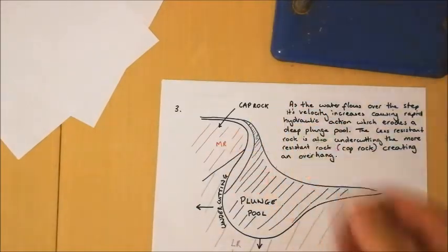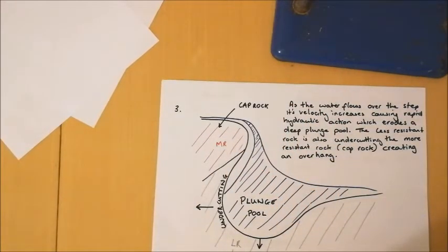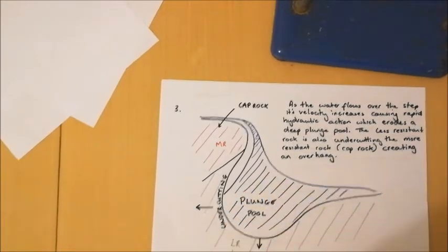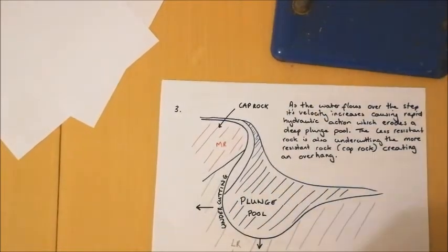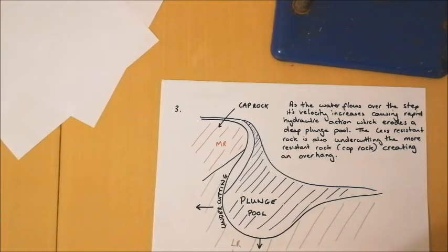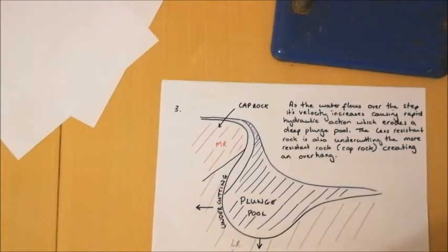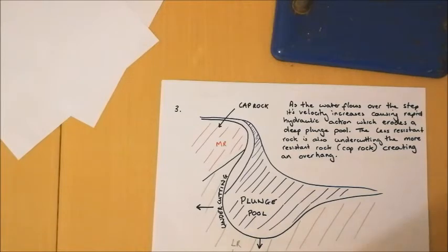As the water flows over that step, it's going to increase in velocity. Gravity is going to have an effect on it and the water's speed is going to increase. As a result, we're going to have really rapid hydraulic action as that water plunges over the step into the less resistant rock below. Over time, that's going to create a very deep plunge pool at the base of the waterfall. You'll see that in photos of waterfalls, there'll be an area of water at the bottom that is really quite deep, and that we refer to in geography as a plunge pool.